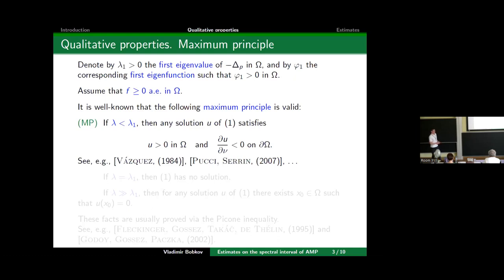Assume that f is non-negative and of course not identically zero. What can we say about the sign of solutions? The following information is more or less very well known—it's a maximum principle which says the following: if λ is below λ₁, then any solution to our problem is strictly positive and satisfies the boundary point lemma. In the linear case this is very classic, and in the nonlinear case I refer to Vázquez and for further references to Pucci and Serrin's book.